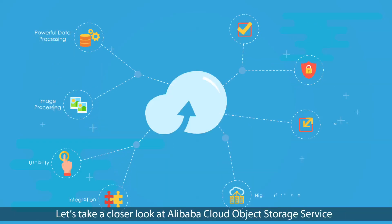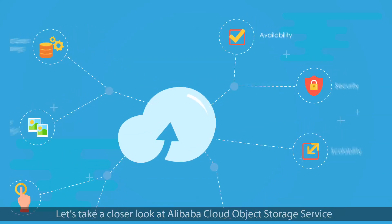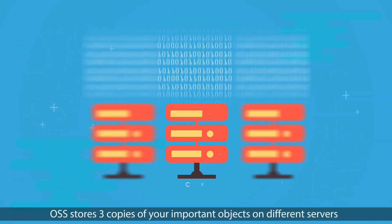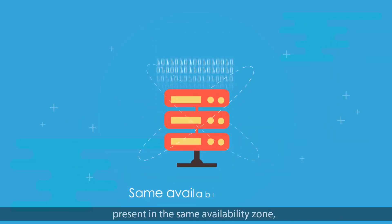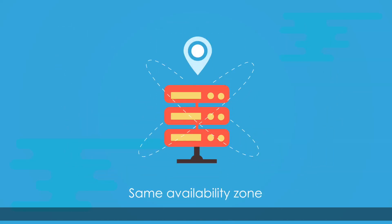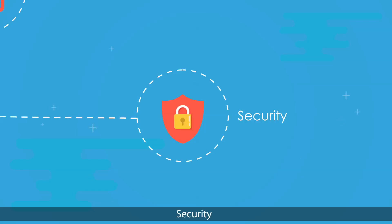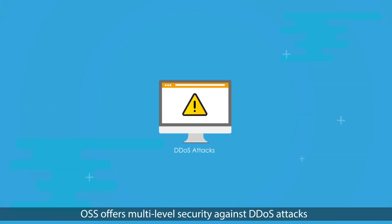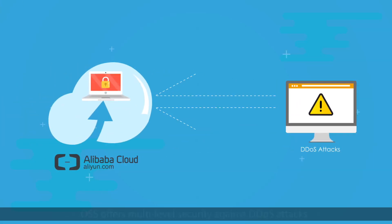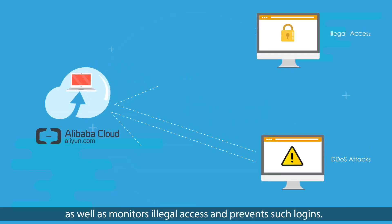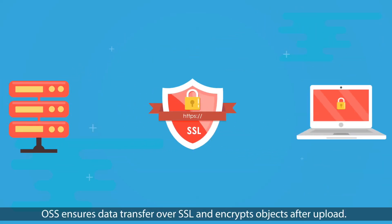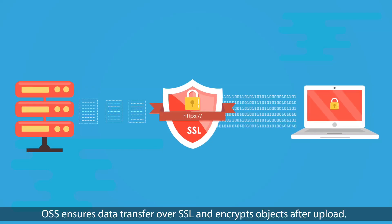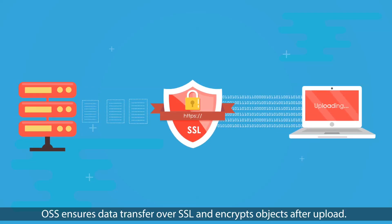Let's take a closer look at Alibaba Cloud Object Storage Service. Availability: OSS stores three copies of your important objects on different servers present in the same availability zone. Security: OSS offers multi-level security against DDoS attacks, monitors illegal access, prevents such logins, ensures data transfer over SSL, and encrypts objects after upload.